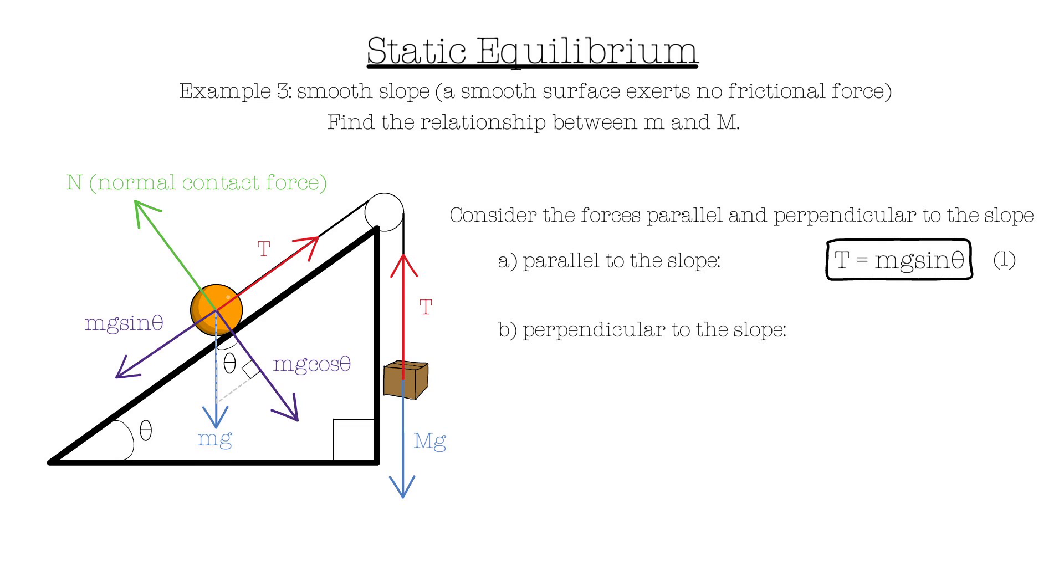Taking perpendicular forces, we get N equal to the vertical component of the weight, mg cos theta. You can pause the video and check to see if you understand.